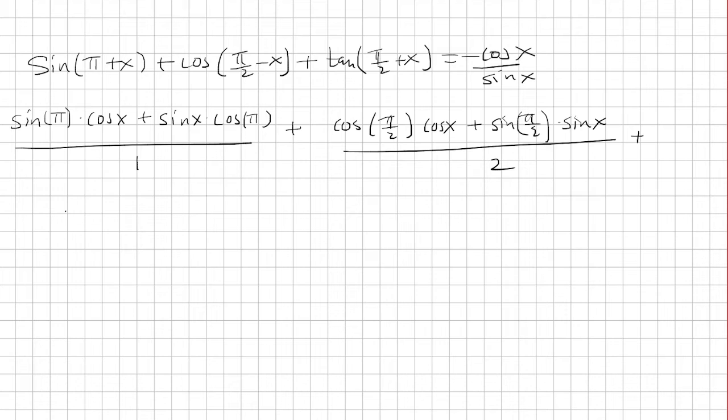Now for tangent pi over 2 plus x, I'm going to rewrite tangent as just sine over cosine. So that's pi over 2 plus x and pi over 2 plus x. We want to show that this whole thing is equal to negative cosine over sine.